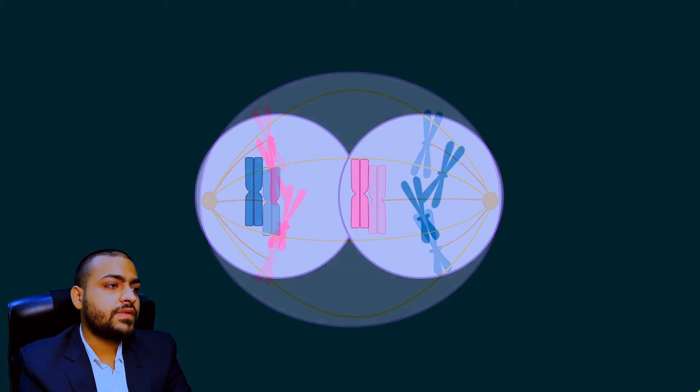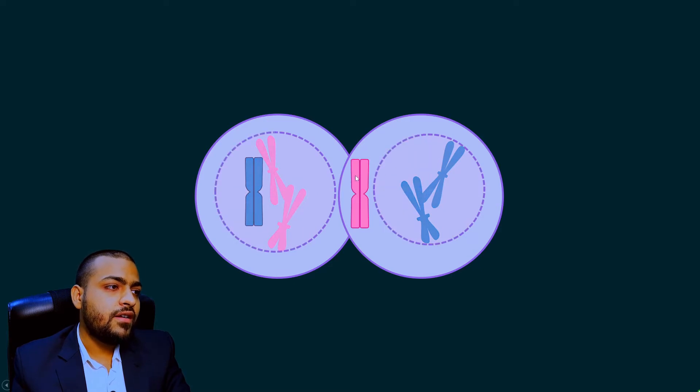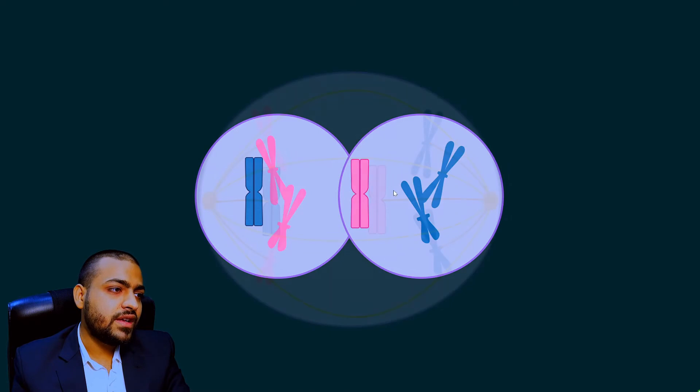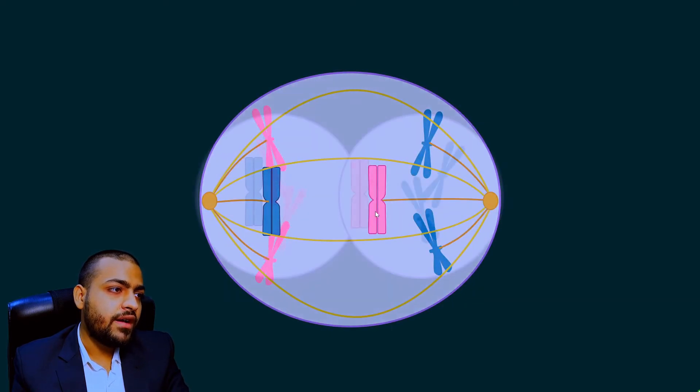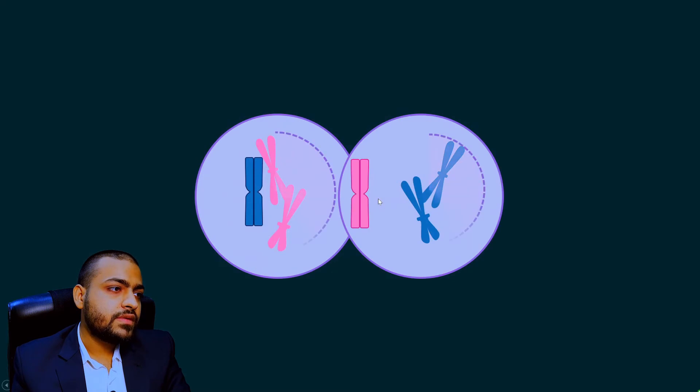So this cell has divided and now nuclear membrane will appear. Now you can see what happened here, that this spindle fiber which had lagged behind.